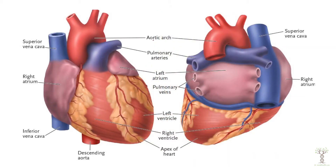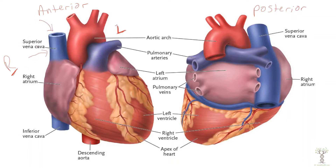First we will look at the outer structures of the heart. This is looking at an anterior view, and over here we have the posterior view. Veins are going to be bringing blood back to the heart. The blood is going to flow back to the heart through the superior and inferior vena cava. Anything above the diaphragm comes back through the superior, and anything below the diaphragm comes back through the inferior vena cava.